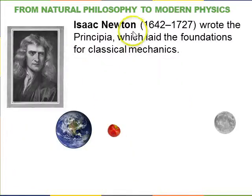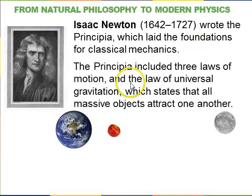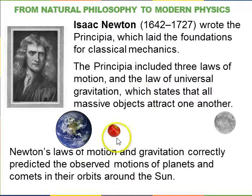Isaac Newton came after Galileo and wrote down a lot of mathematical formulae which were based on Galileo's ideas. He sort of continued Galileo's work and wrote the Principia, which had the three laws of motion, a law of universal gravitation, which states that all massive objects attract one another. So, these laws of motion correctly predicted the observed motions of the planets and comets in their orbit around the sun, and also the orbit of the moon around the earth.